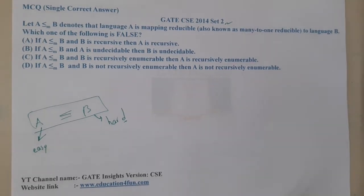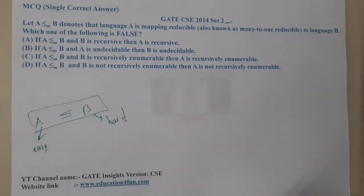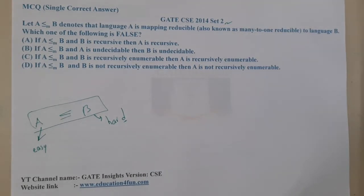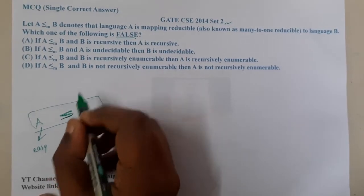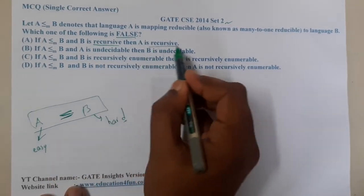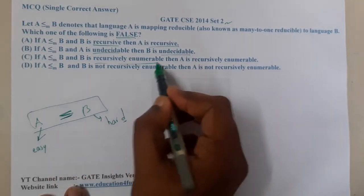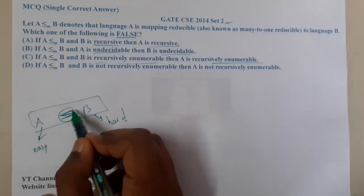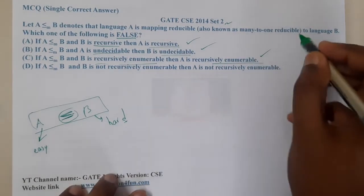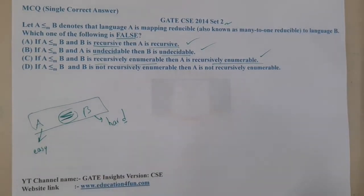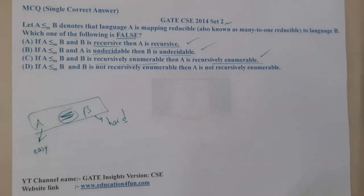Option D says: if B is not recursively enumerable, then A is also not recursively enumerable. The options are a bit interesting because they are asking for a FALSE statement. Since the relation is less than or equal to, both sides could be equal, so the first three options can be correct.